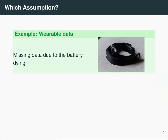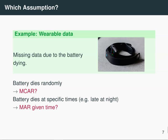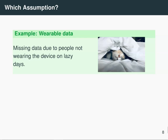Let's think about the first example: the battery dying. Well, if the battery dies in a completely random way — so it has nothing to do with the step counts or any other variables — this would be missing completely at random. However, it's more likely that there's a pattern to the missingness. Maybe the data is more likely to be missing in the evening every other day because that's how long the battery lasts. In that case you could investigate whether the data is missing at random given the time of day — if the time of day is observed and the missingness depends only on that, it might be missing at random.